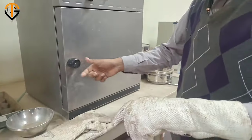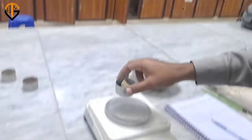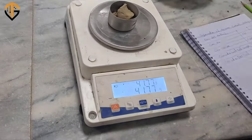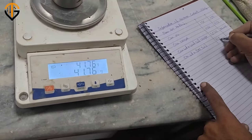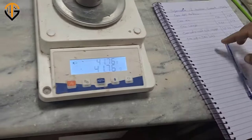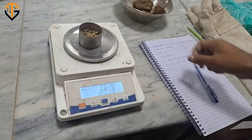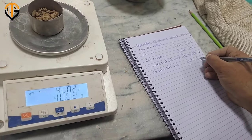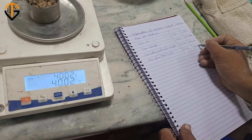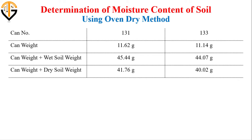After 24 hours, the soil samples have been dried. Now we will determine the weight of can plus dry soil. The weight of dry soil plus container comes out to be 41.76 grams for the first container, and 40.02 grams for the second container.